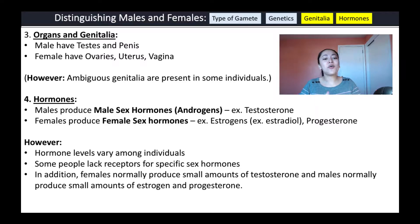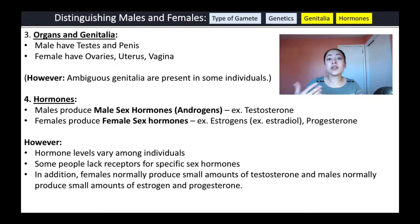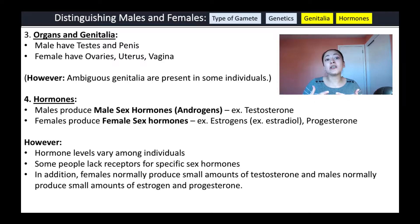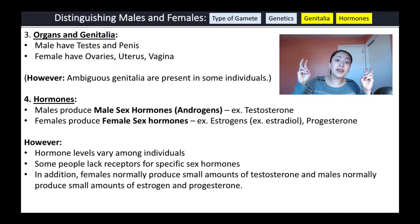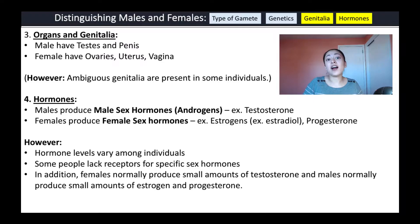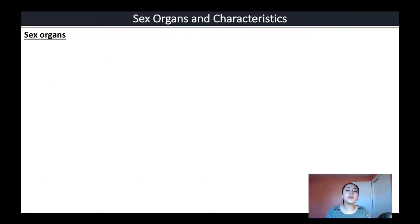Hormone levels can vary among individuals. Some people may lack receptors for specific sex hormones — for example, somebody who is genetically male may produce testosterone but not have the receptors for it, and therefore their body does not react to testosterone. In cases like this, those individuals may actually develop female sexual characteristics. In addition, females normally produce small amounts of testosterone, and males normally produce small amounts of estrogen and progesterone, so these hormones also play a role in the physiology of both sexes.